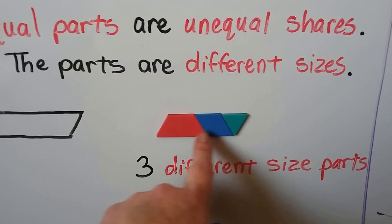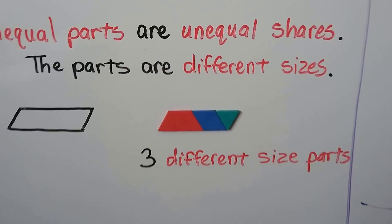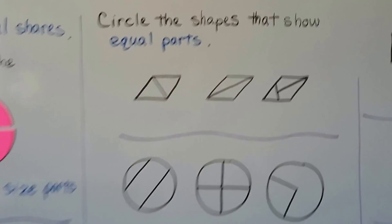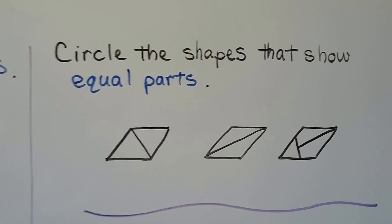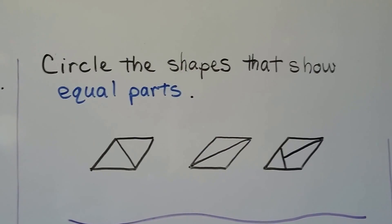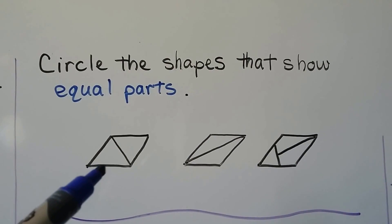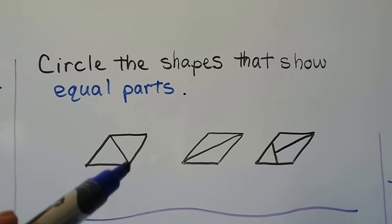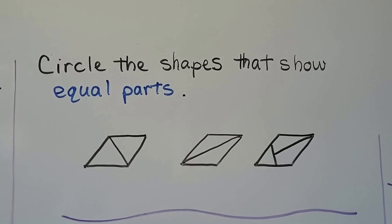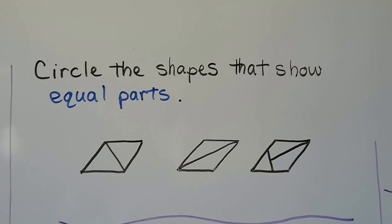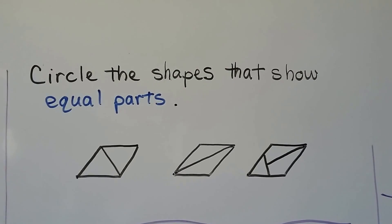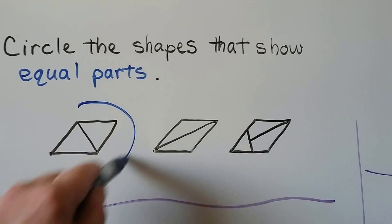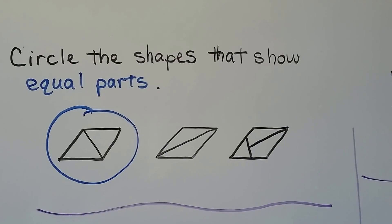We have a big one, a medium one, and a small one. Circle the shapes that show equal parts. Here we have a rhombus and it's got a line going from this corner to this corner, from this vertex to this vertex. Does it look like it's equal parts? That's equal parts.